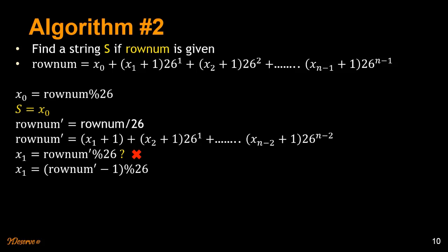So what we are going to do is we are going to subtract 1 from row number dash by which we will end up with x1 plus other terms. Finally, we will get x1 by doing a mod on row number dash minus 1. Let's go ahead and try to repeat the process.